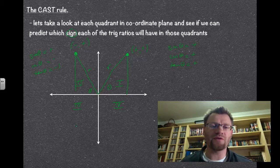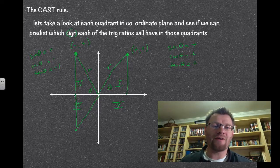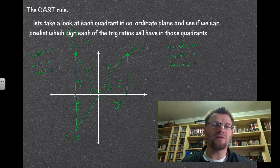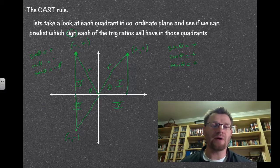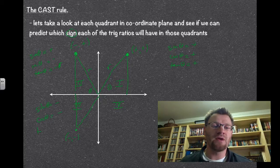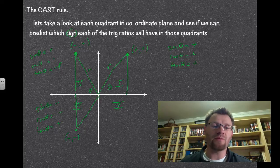In the third quadrant, like the question we just did, both the x value and the y value are negative. So anything that has adjacent and opposite in it will have a negative value, except for tan, because it's a negative divided by a negative. So sine of theta, which is opposite over hypotenuse, is negative. Cosine of theta, adjacent over hypotenuse, is negative. And tan theta, opposite over adjacent, is a negative divided by a negative, which gives you a positive.